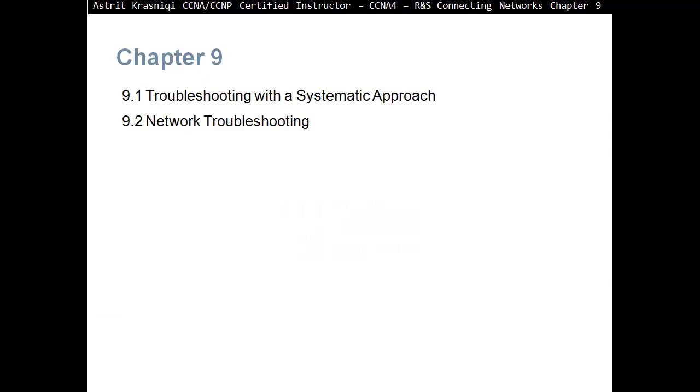Chapter 9 is divided into two sections. First section is 9.1, Troubleshooting with Systematic Approach. And section 9.2, Network Troubleshooting.